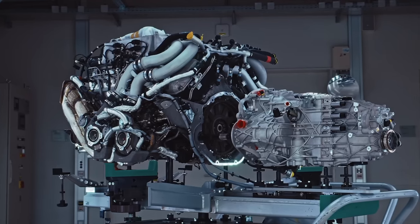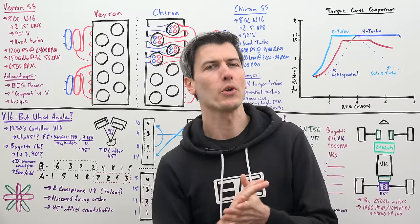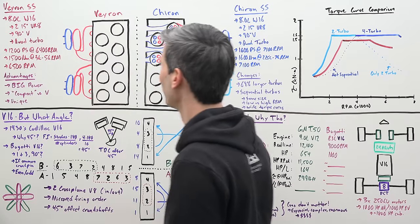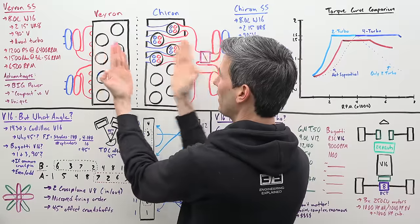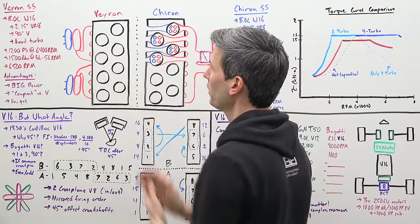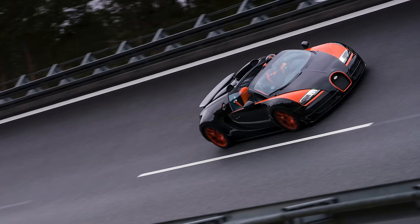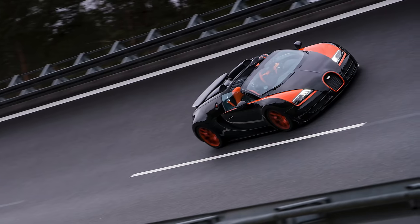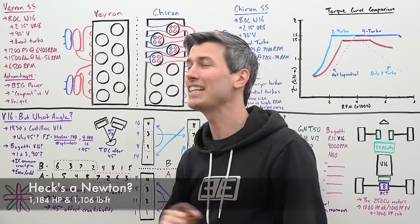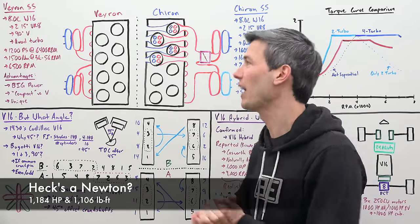It all starts with the Bugatti Veyron which had an 8.0 liter W16 engine. Essentially this was two VR8s at a 90 degree angle with these VR8s having a 15 degree angle between each cylinder bank. We have quad turbochargers and in the most potent version going in the Veyron Super Sport this was making 1200 metric horsepower at 6400 rpm, 1500 Nm of torque from 3 to 5000 rpm with a red line of 6500 rpm.